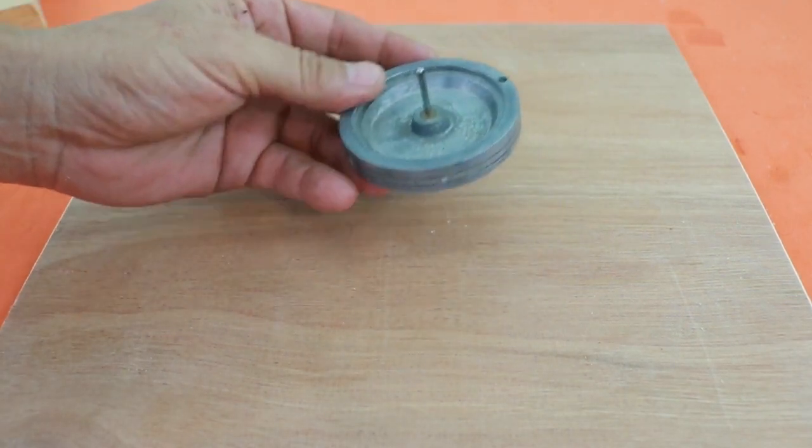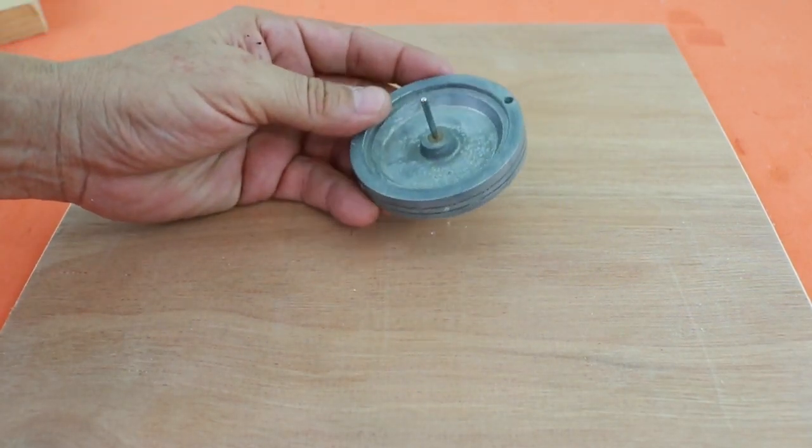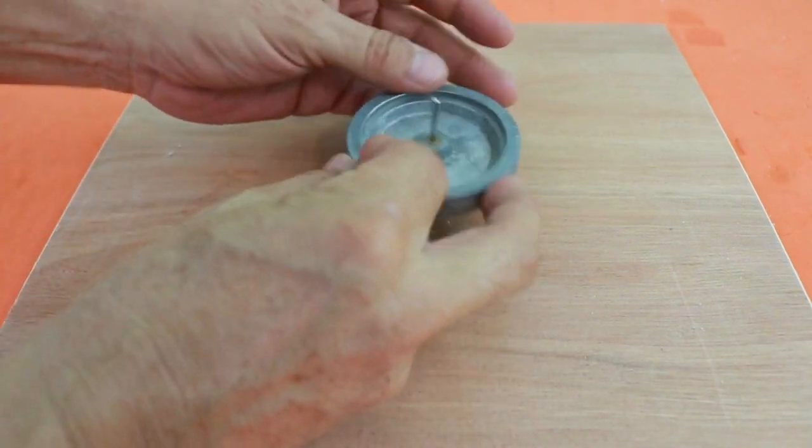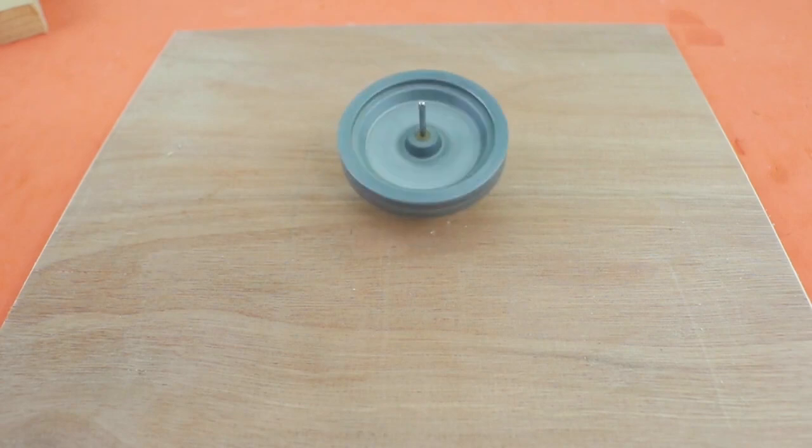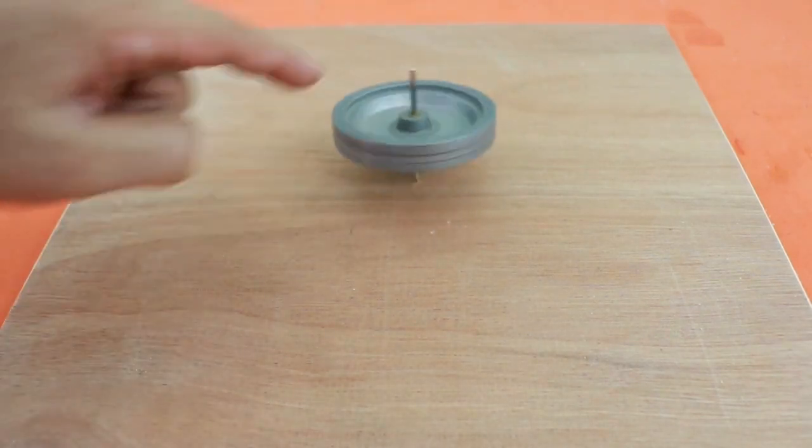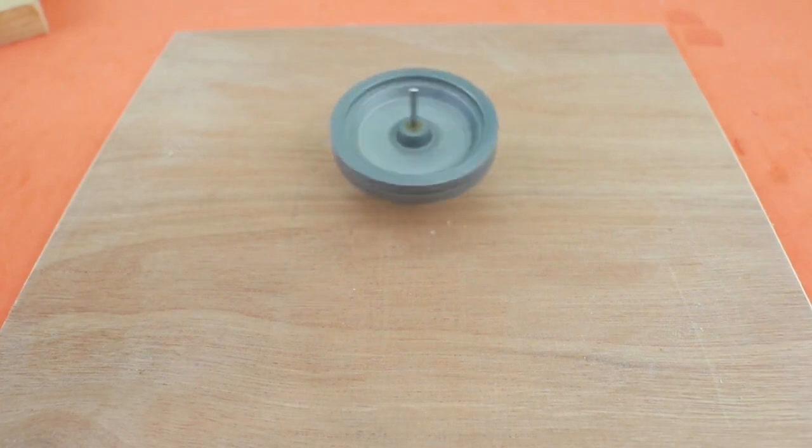And if we now invert the direction of rotation. Now let's do it anticlockwise. We also observe the precession now in the reverse direction, also anticlockwise.